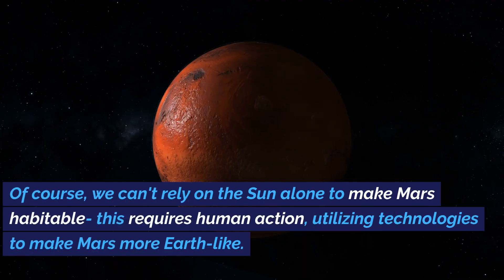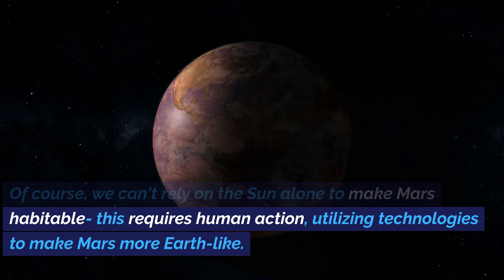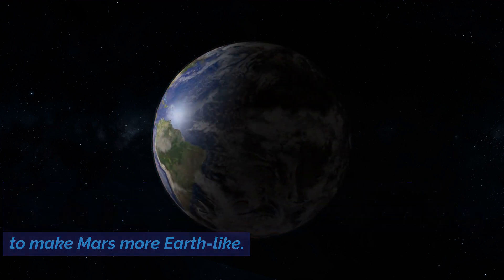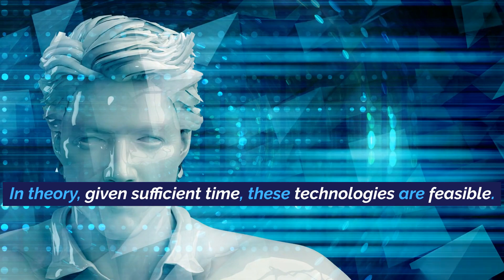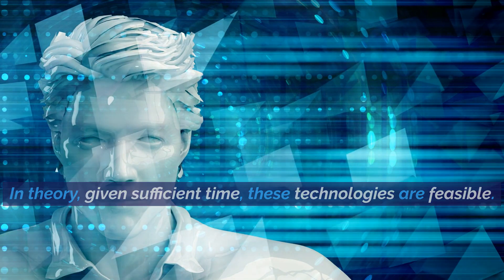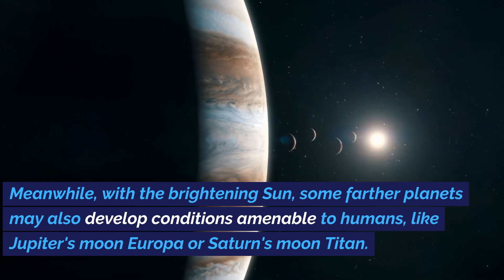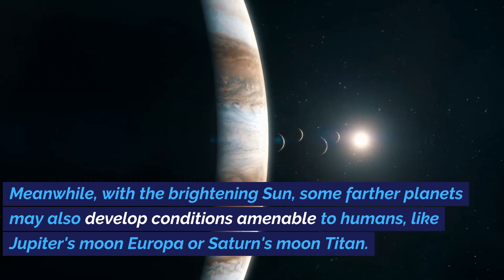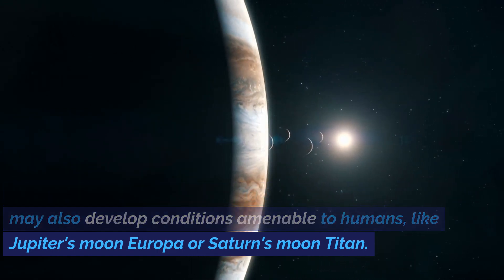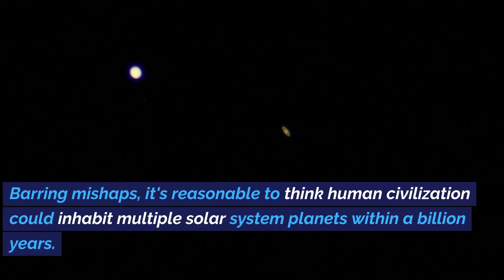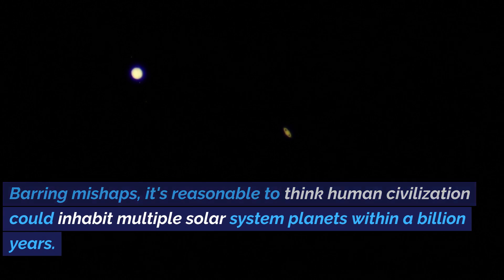Of course, we can't rely on the Sun alone to make Mars habitable. This requires human action, utilizing technologies to make Mars more Earth-like. In theory, given sufficient time, these technologies are feasible. Meanwhile, with the brightening Sun, some farther planets may also develop conditions amenable to humans, like Jupiter's moon Europa or Saturn's moon Titan. Barring mishaps, it's reasonable to think human civilization could inhabit multiple solar system planets within a billion years.